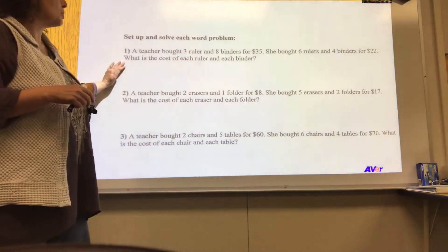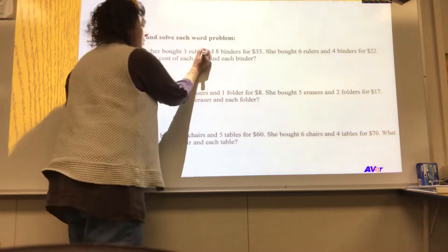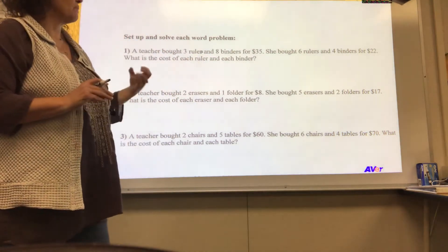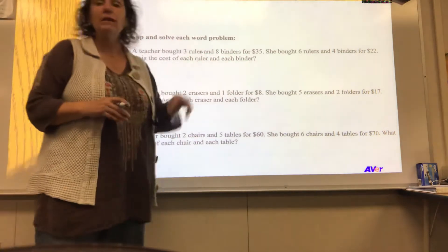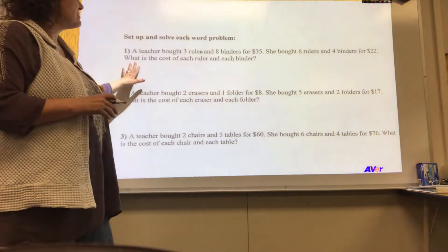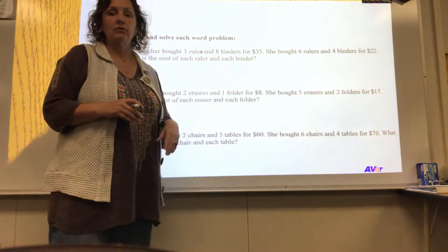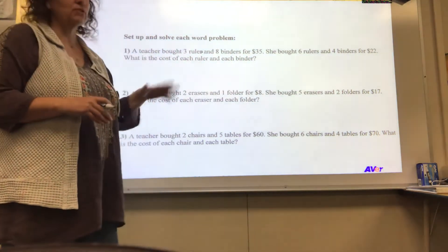First one. A teacher bought three rulers and eight binders for $35. She bought six rulers and four binders for $22. What is the cost of each ruler and each binder? Cool beans. We read it the first time.